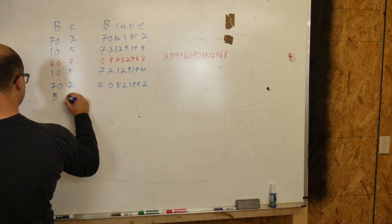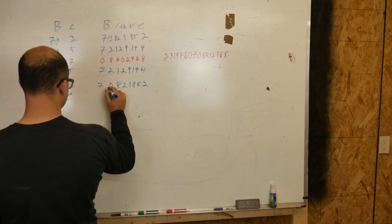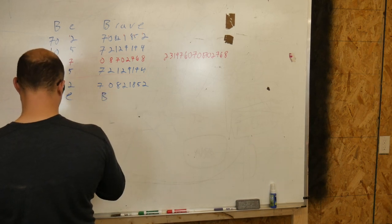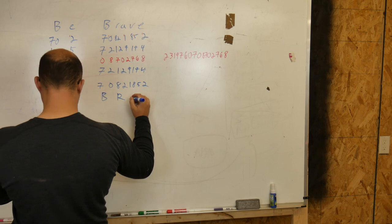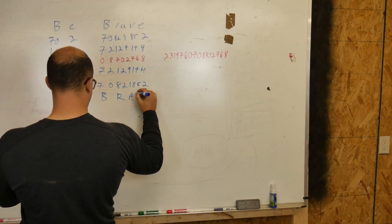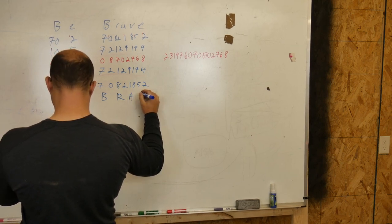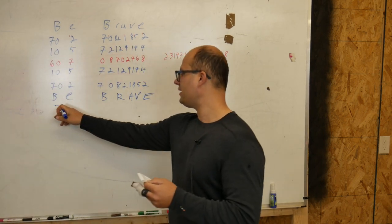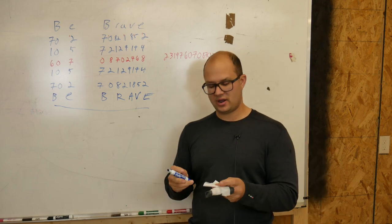Two, I know, is an E. Seven, zero. Again, we know that's a B. Eight, two. That is an R. A is a one. Eight, five is a V. And two is an E. So, we have our message, be brave.